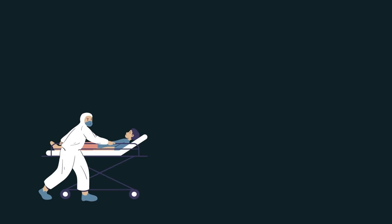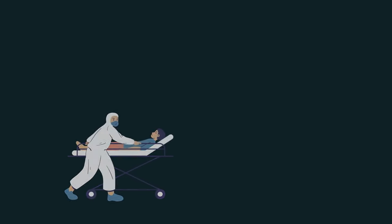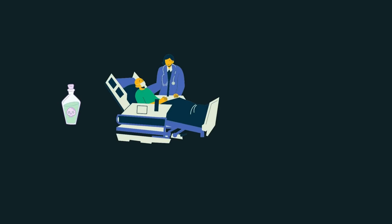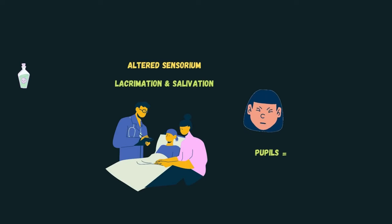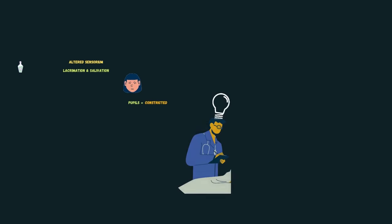Let's take a case scenario where a patient with a history of ingestion of an unknown chemical is brought into the emergency room. The first thing you notice is the patient is having an altered sensorium with profuse lacrimation and salivation. You start examining and notice the pupils, which are constricted bilaterally and they are pinpoint. What is the first guess you would take as an attending physician? There is a very high probability that this is a case of organophosphate poisoning.